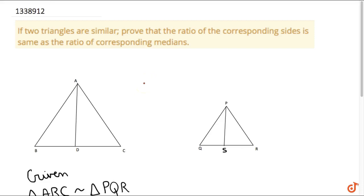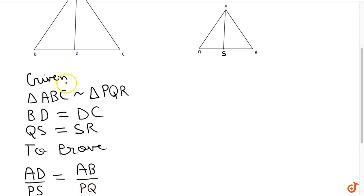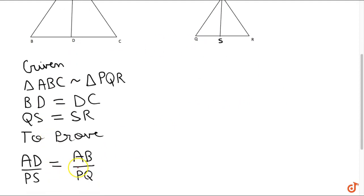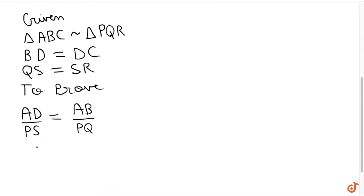Hi guys, so in this video we will show that if two triangles are similar then the ratio of corresponding sides is same as the ratio of corresponding medians. Basically, we are given that triangle ABC is similar to triangle PQR, and D is the midpoint of BC and S is the midpoint of QR, and we have to prove that AD by PS is equal to AB by PQ.